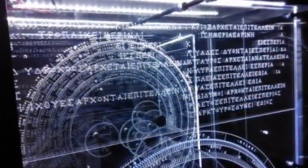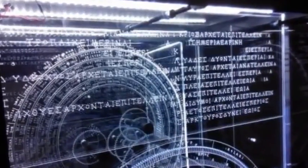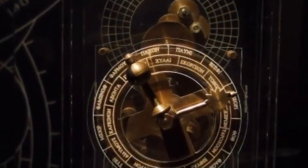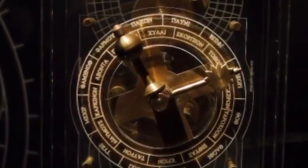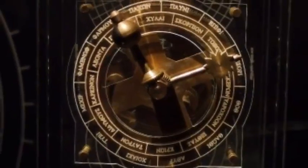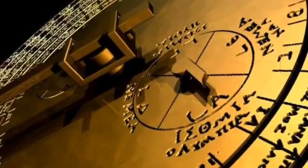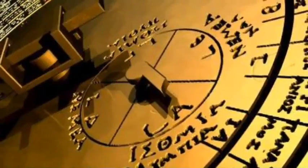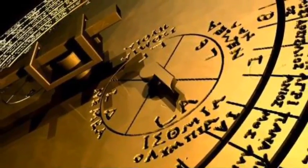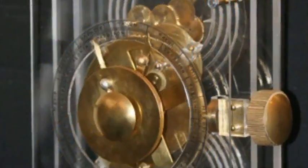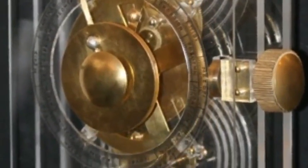Writing on a bronze panel at the back of the mechanism suggests the inventor left either instructions for how to work it or an explanation of what the user was seeing. The inscription, which is in Koine Greek, the most common form of the ancient language, mentions the cycles, dials, and some of the functions of the mechanism. While the text doesn't specifically tell someone how to use it and assumes some prior knowledge of astronomy, it provides written labels for the person looking at the mechanism.